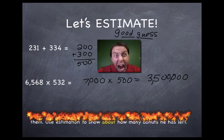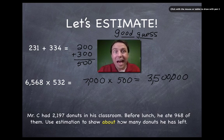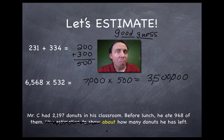Word problems would get you because you got to figure out what computation you're using, and then you have to estimate when it tells you to. So let me read this to you. Mr. C had 2,197 donuts in his classroom. It's true. I always have that many donuts in my classroom, just in case. Before lunch, he ate 968 of those donuts, or of them. Use estimation to show about how many donuts he has left. Now look, I turn this word about yellow for a good reason. Let's imagine that this isn't even there. It doesn't always tell you, oh, estimate. Use estimation. Sometimes you'll see this word about. What does about mean? About just means get close. About how many. Think about when you would have heard that around you. When someone's like, about how much time do we have left? Well, we have close to this much time. So the word about tells you to estimate, or at least it tells you you can estimate.